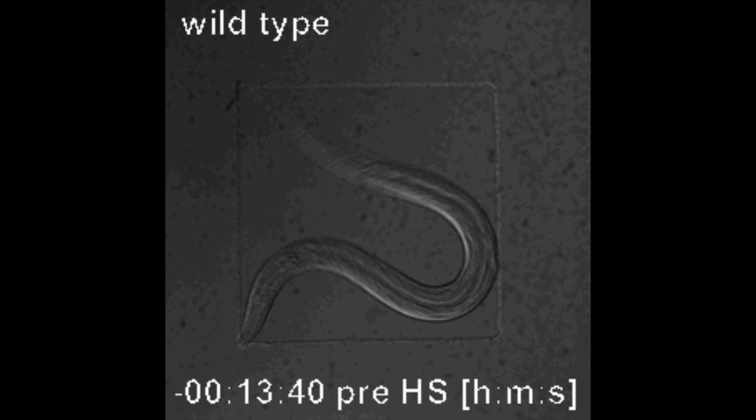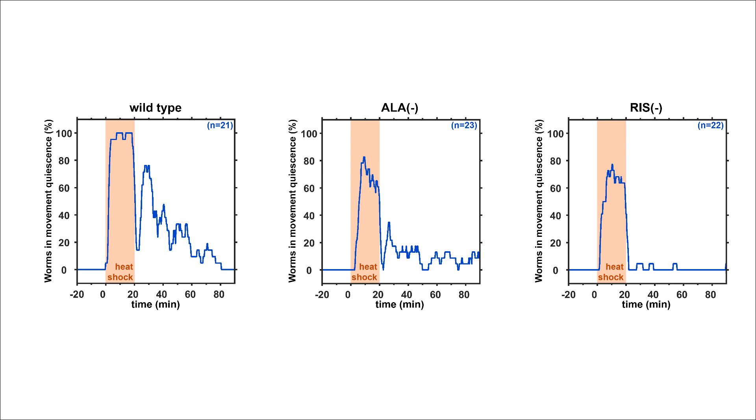Before the heat shock, all worms actively moved inside their chamber. After setting the temperature to 37 degrees Celsius, wild-type worms immobilized. After the heat shock, worms slept in short periodic bouts. Worms with impaired ALA showed decreased sleep, and worms without a functional RIS did not show any quiescence bouts after the heat shock at all. Thus, both RIS and ALA are necessary to induce quiescence after the heat shock.